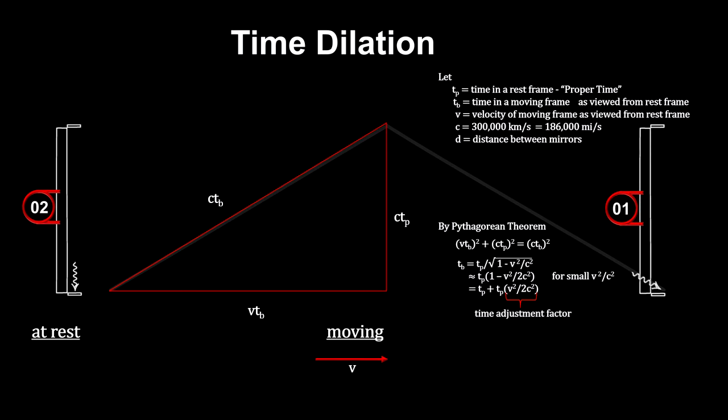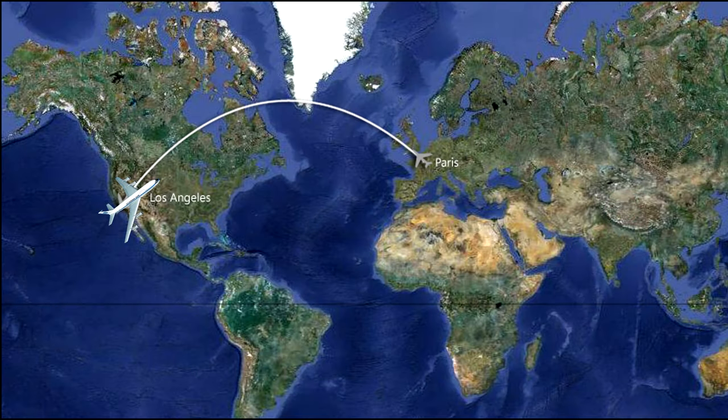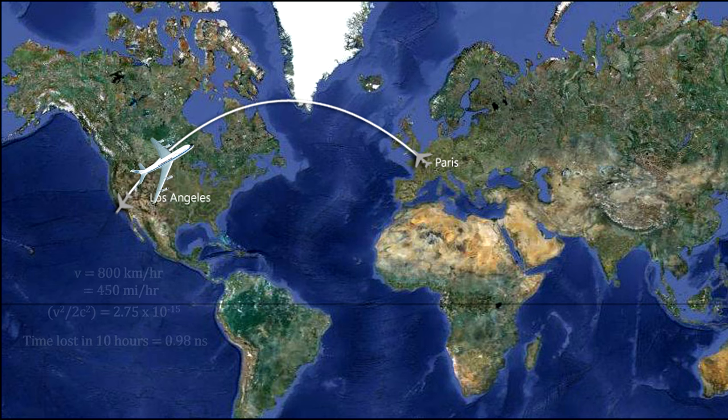It's the geometry of the situation that gives us the conversion factor. If I were on a 10-hour flight from L.A. to Paris traveling at 800 kilometers per hour, I would lose just under a nanosecond—way too small to notice.